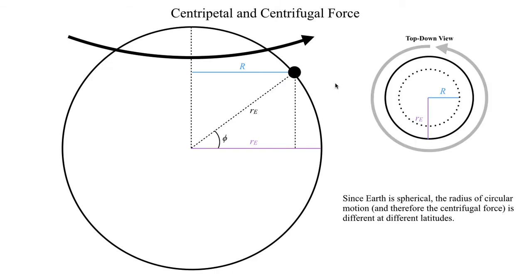This might be hard to visualize, so here's a top-down perspective. You can see the radius for centrifugal force highlighted in blue, and the Earth's radius highlighted in purple. The dotted line represents the radius for our centrifugal or centripetal acceleration. At this particular point, as I go down towards the equator, you can see that R would get longer — the radius would in fact get longer, and that would be reflected on this diagram.